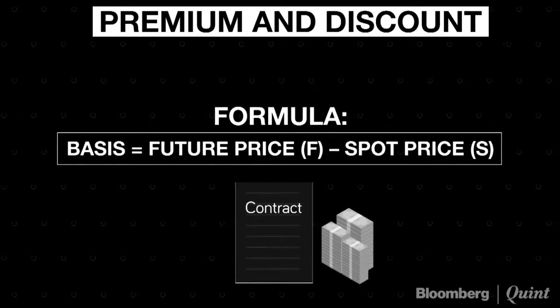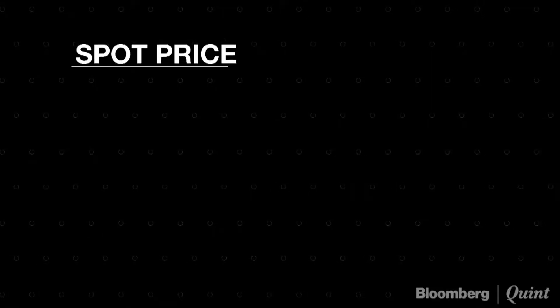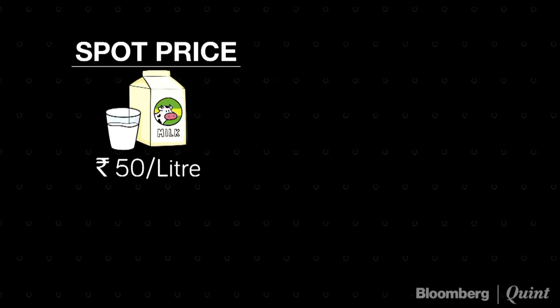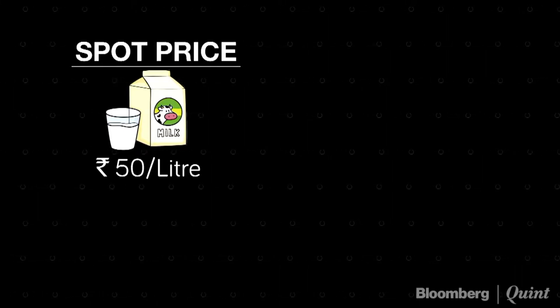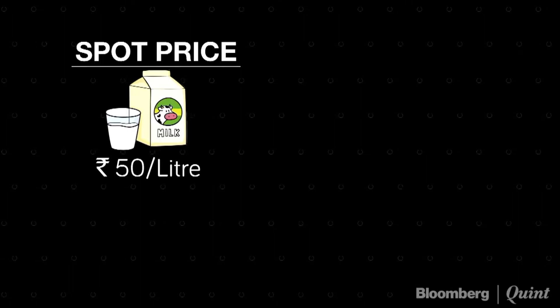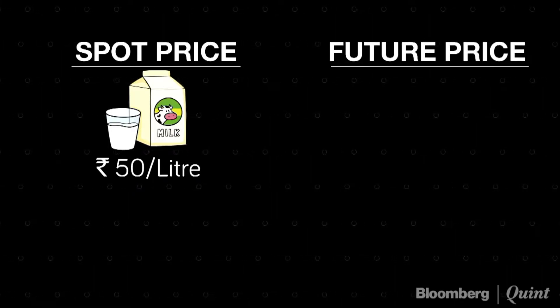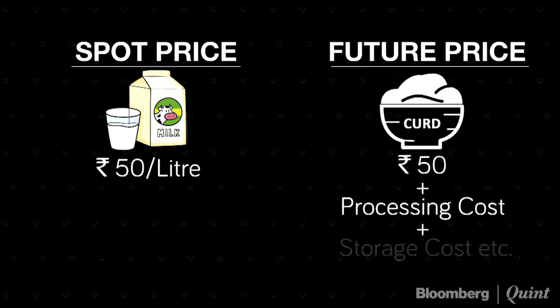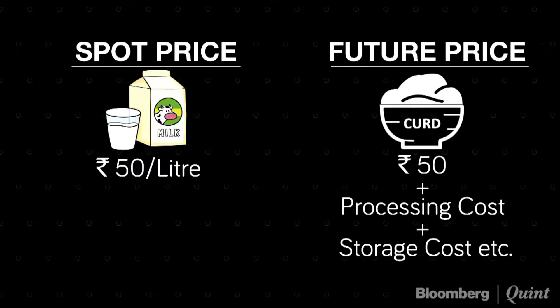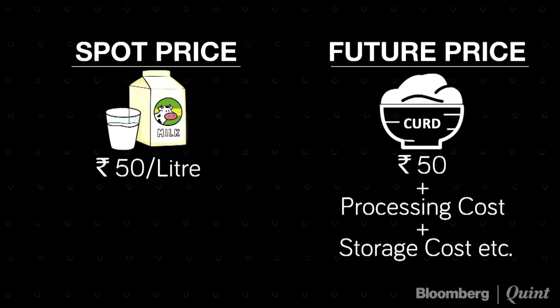Before we get into the concept, why don't you tell us with a real-world example about how this concept of basis works? So, as you said, the future price is always different from the spot price. Let's understand this with the example of milk. Say, for example, the price of milk is given. Now, we know that curd is derived from milk. So if I want to prepare curd from one liter of milk, there is some processing charge involved. Once the curd is formed, you will store that curd in a refrigerator for it to form.